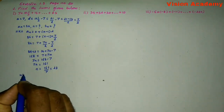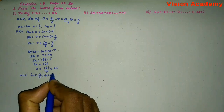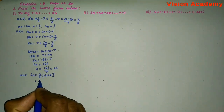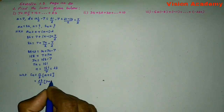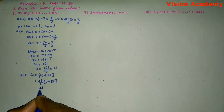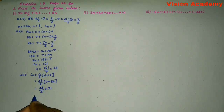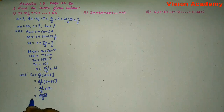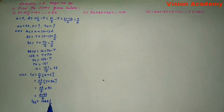Now we know that Sn equals N by 2 into (A plus the last term L). Here, N is 23, so S23 equals 23 by 2 into (7 plus 84), which is 23 by 2 into 91. That gives 23 into 91 equals 2093, divided by 2. So S23 equals 2093/2, which can also be written as 1046 and 1/2.